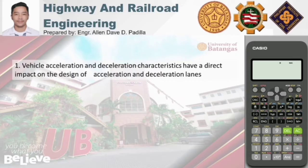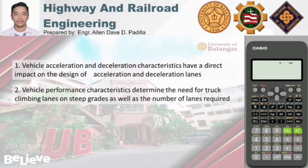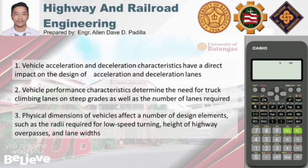Vehicle acceleration and deceleration characteristics have a direct impact on the design of acceleration and deceleration lanes — the length of those lanes is based on the characteristics of vehicle acceleration and deceleration. Vehicle performance characteristics also determine the need for truck climbing lanes on steep grades as well as the number of lanes required. Physical dimensions of vehicles affect design elements such as the radii required for low-speed turning, height of highway overpasses, and lane widths.